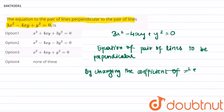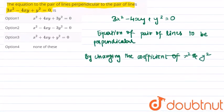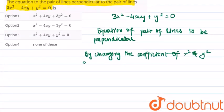and by changing the sign of the middle term, we get the equation of a pair of lines that is perpendicular.